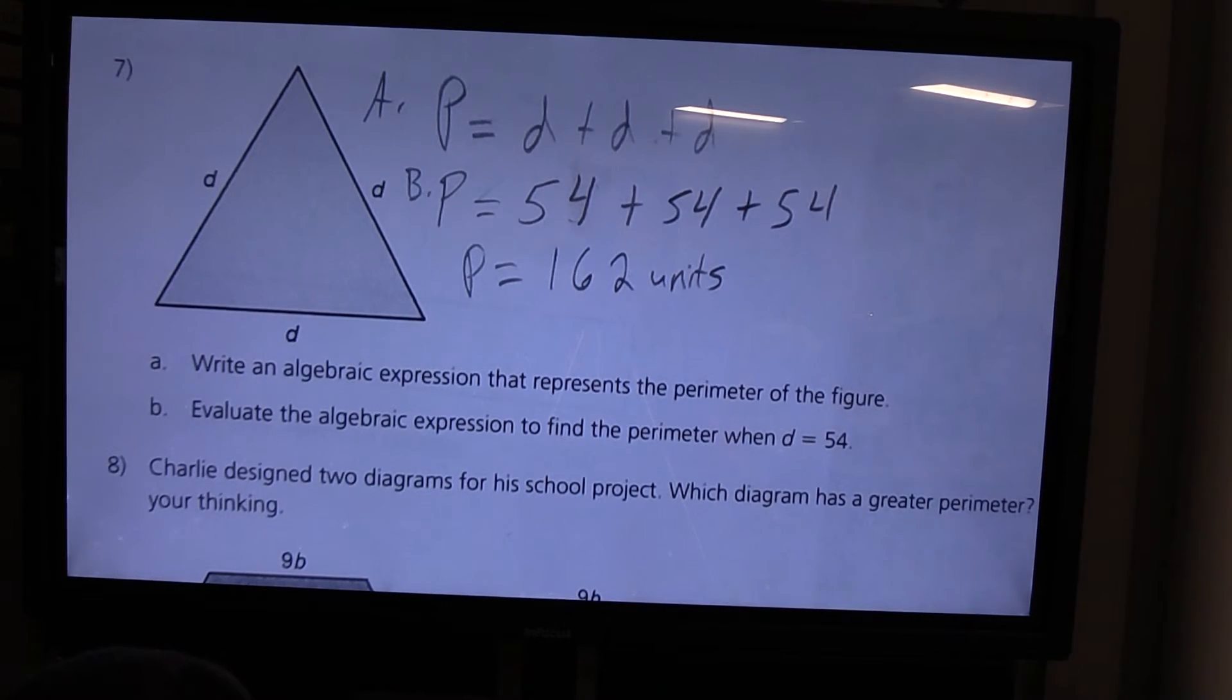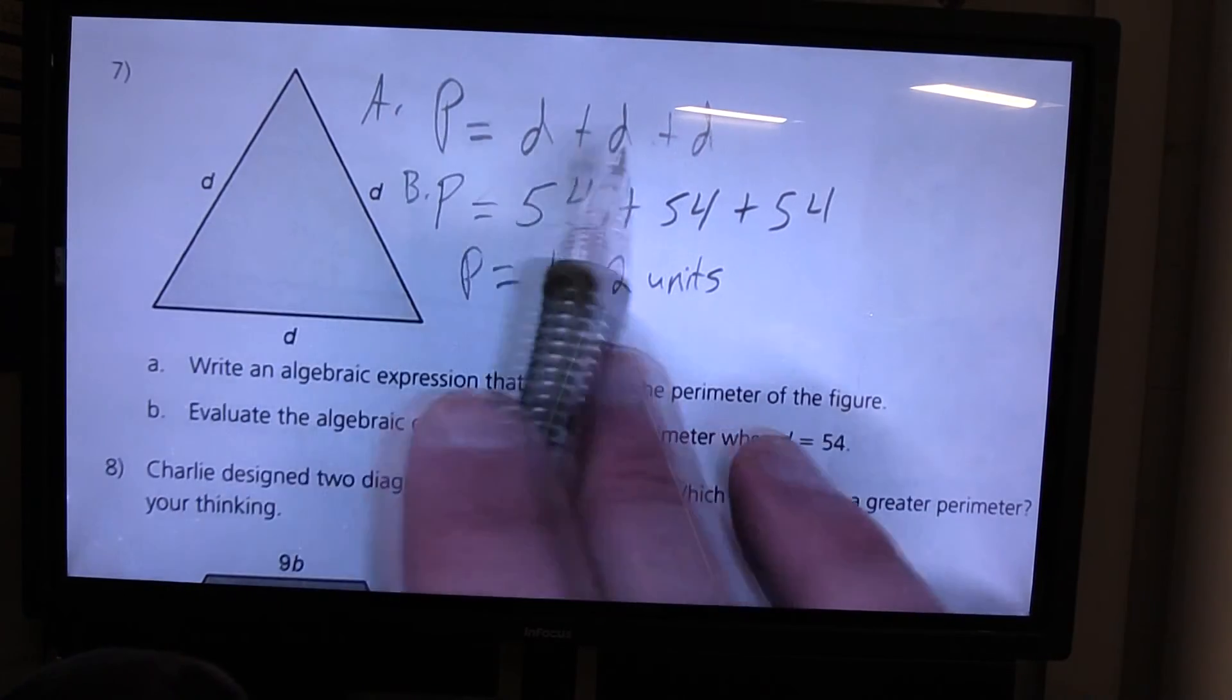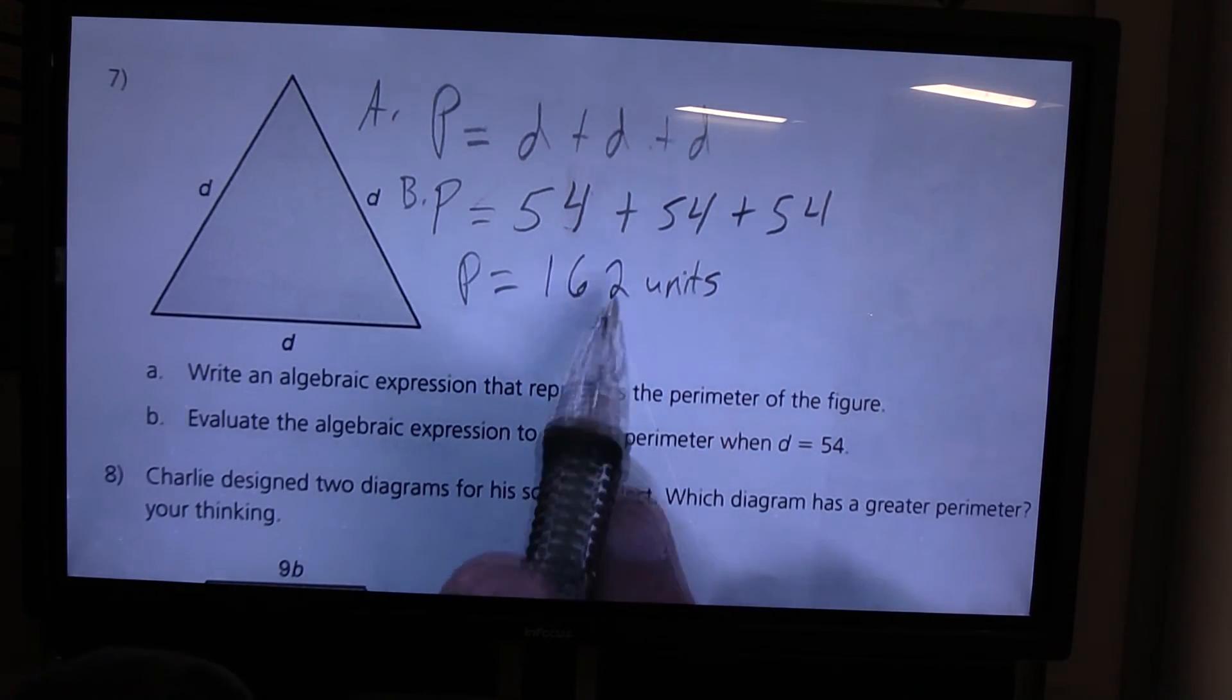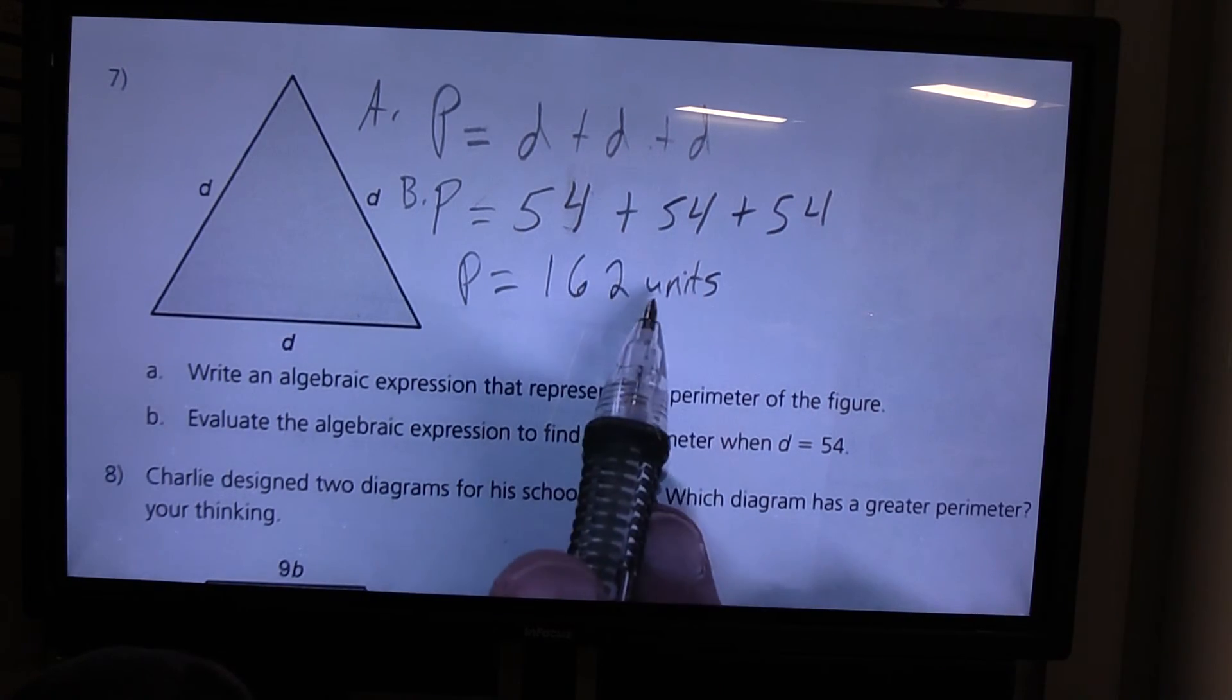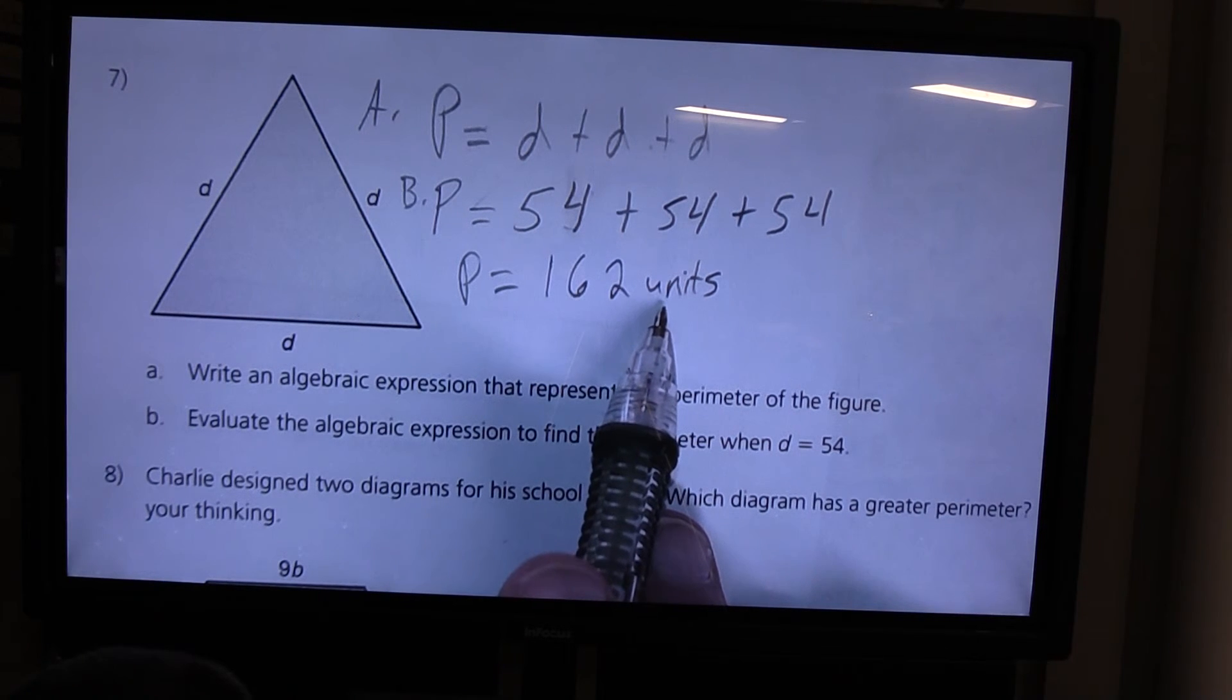So for part A, this is what I would have for my algebraic expression. And part B, this is what I would have for the perimeter of the triangle when D equals 54 units.